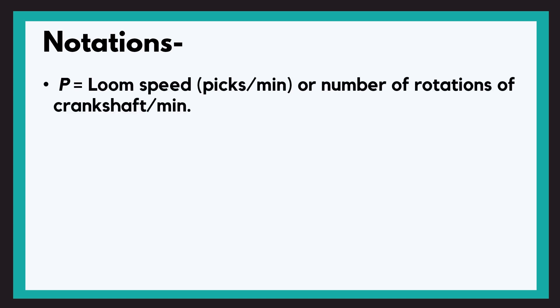Starting with P, that is the loom speed in picks per minute, that means the number of picks inserted by the shuttle in one minute or the number of rotations of crankshaft in one minute. Now we should know that for one rotation of crankshaft in a loom it is responsible for one pick insertion.